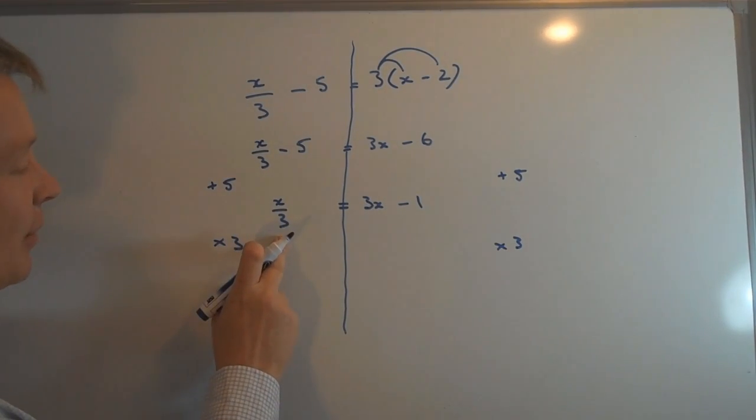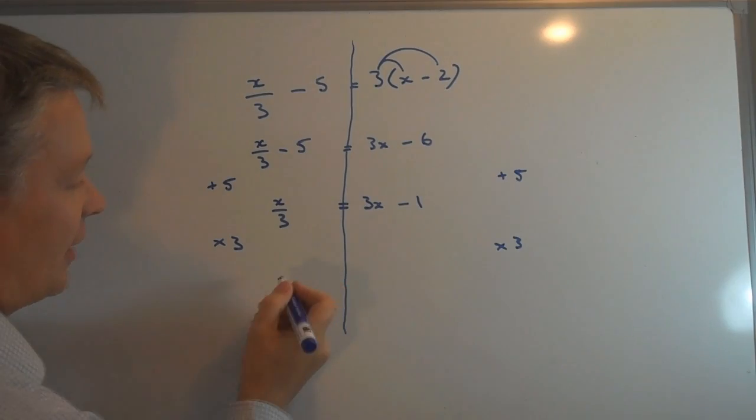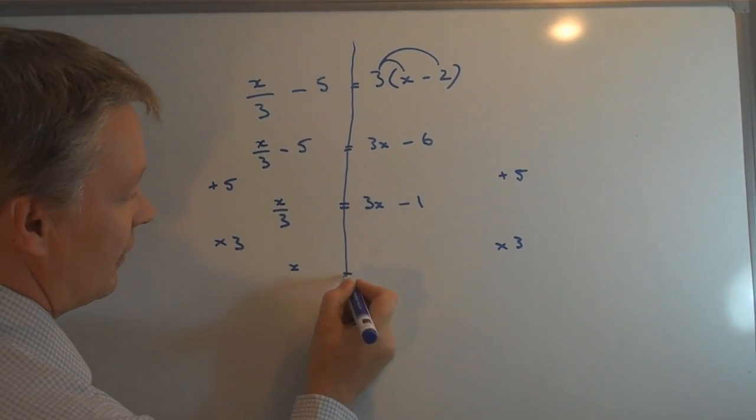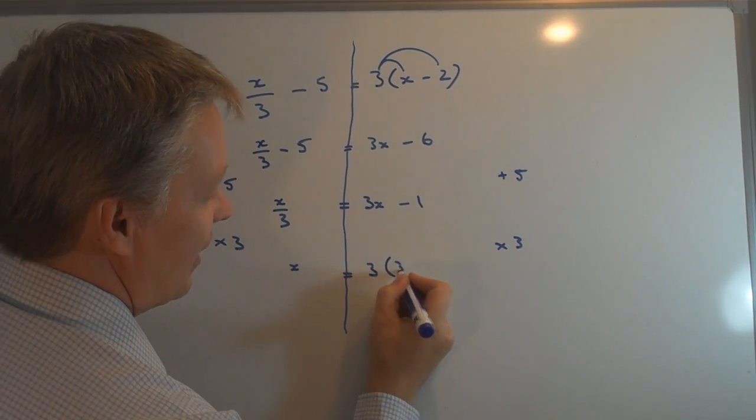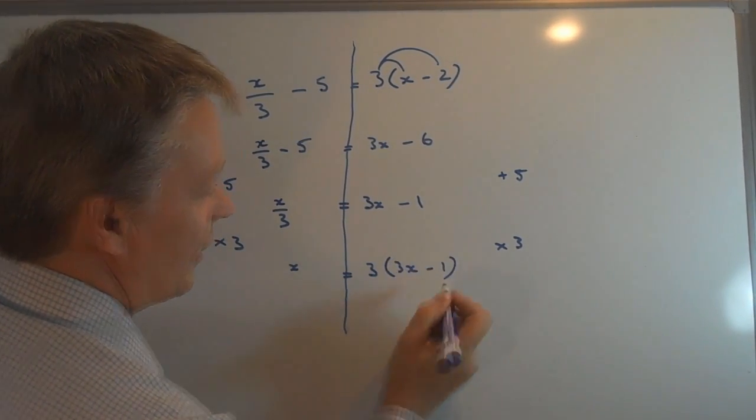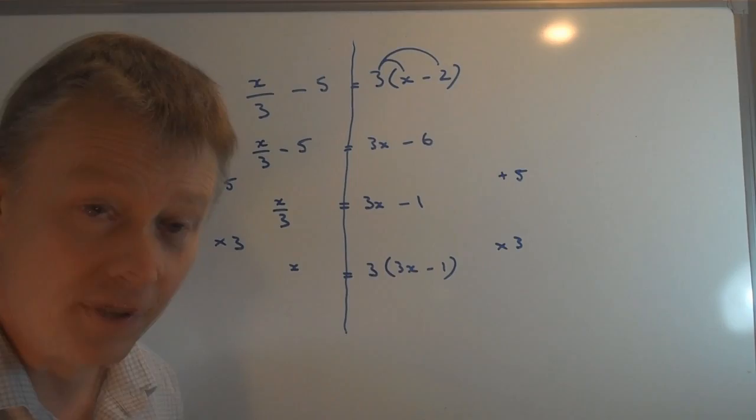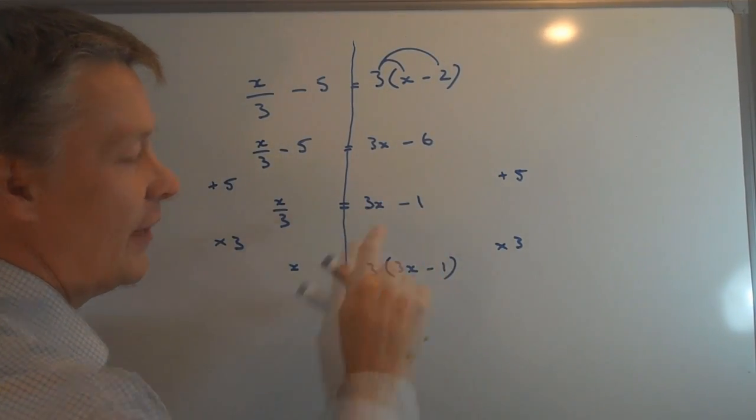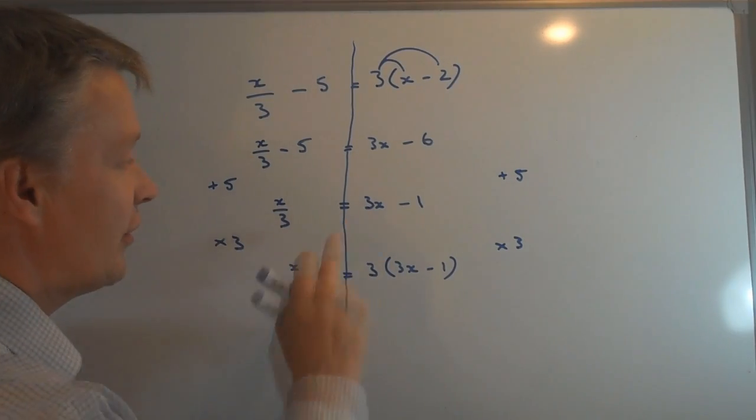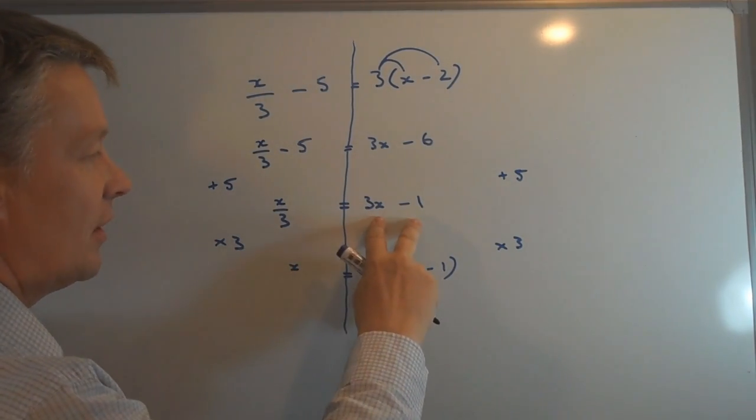So I multiply this side by 3, I get x on its own. On this side, I need to probably write it as 3 times 3x minus 1, because it'll help you remember that you're multiplying 3 to the whole of this term, not just to the 3x at the beginning—it's the whole term.